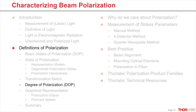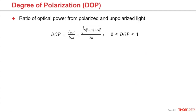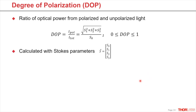Laser beams are usually neither fully polarized nor completely unpolarized. The degree of polarization is introduced in order to quantize the amount of the polarized light components. The degree of polarization is the ratio between the polarized light component and the total light. It can range from 0 for unpolarized light to 100% for completely polarized light. The degree of polarization can only be calculated with the Stokes parameters, but not with the Jones vector.